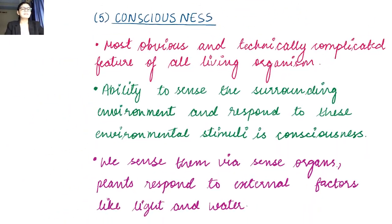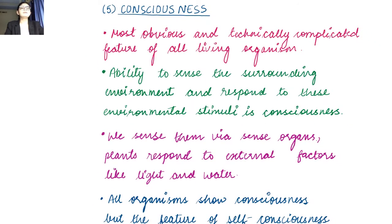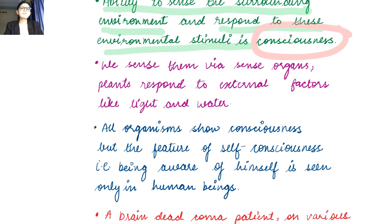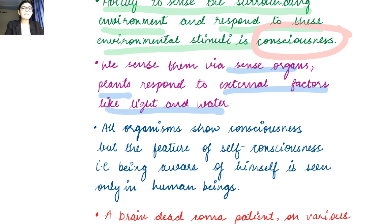Now we come to consciousness, which is probably the most complicated and advanced feature of all living organisms. It is the ability to sense the surrounding environment and respond to environmental stimuli — you are aware of what is happening around you and realign yourself accordingly. In humans, we have sense organs like eyes, ears, and nose. Plants also respond to external factors like light and water. Even bacteria have consciousness — how do bacteria develop antibiotic resistance? That is because of their consciousness; they are able to respond to their environment and come up with their own defenses.